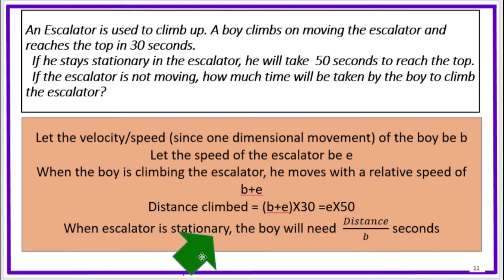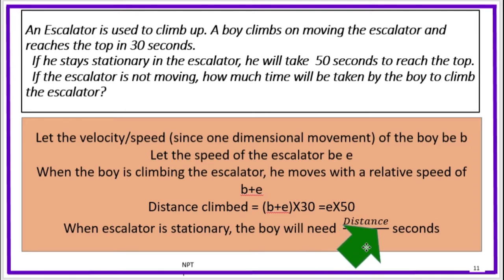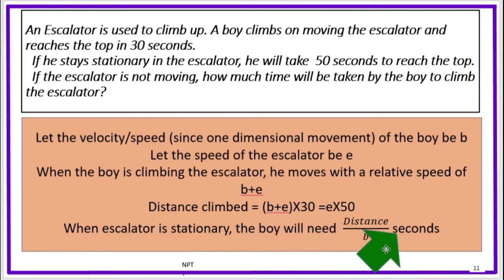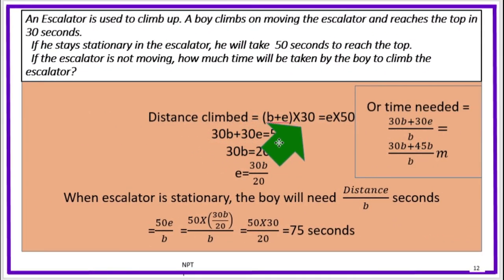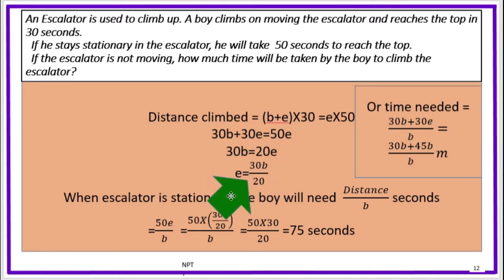When the escalator is stationary, the boy will need distance divided by b seconds. The equation is: distance climbed equals (b plus e) into 30, and this equals e into 50, where 50 seconds is the escalator alone moving. So 30b plus 30e equals 50e, therefore 30b equals 20e, giving e equals 30b divided by 20.